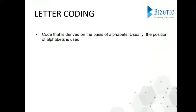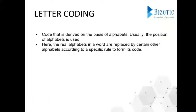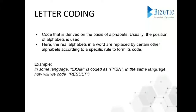There are different types of coding and decoding. The first one is letter coding. As the name indicates, it is derived on the basis of alphabets — usually the position of the alphabets will be used. The real alphabets in a word will be replaced by certain other alphabets according to some specific rule to form its code. For example, in some language 'exam' is coded as 'FYBN', and in the same language, how will we code 'result'?